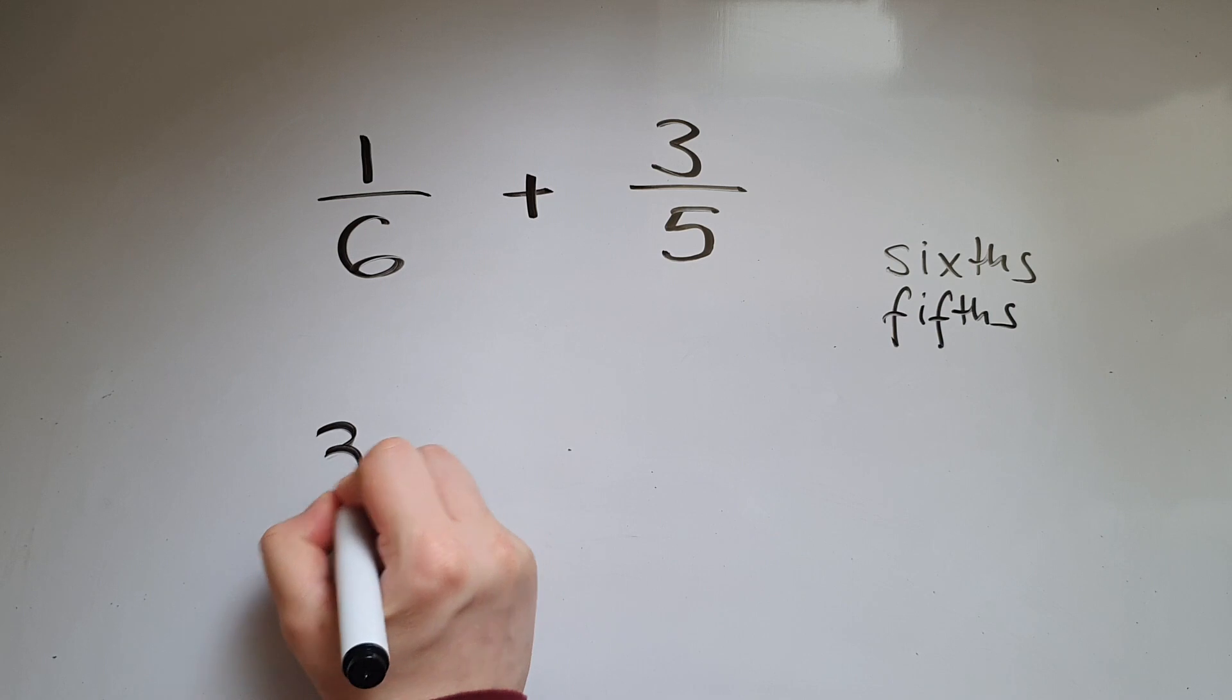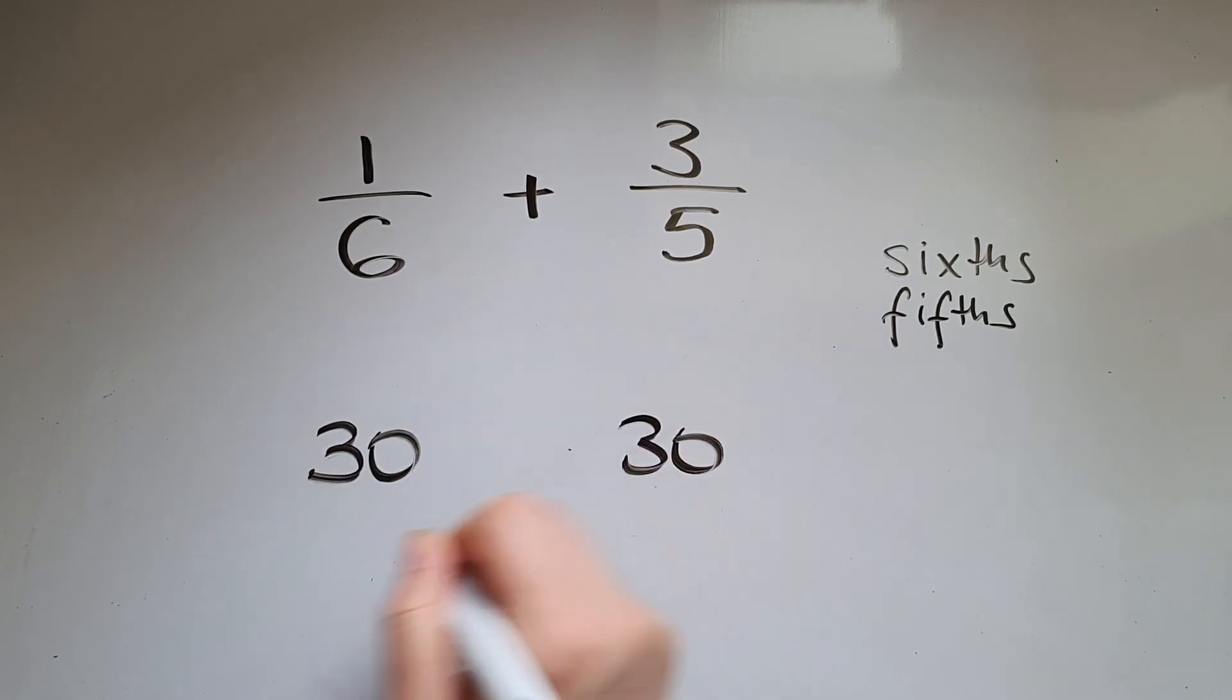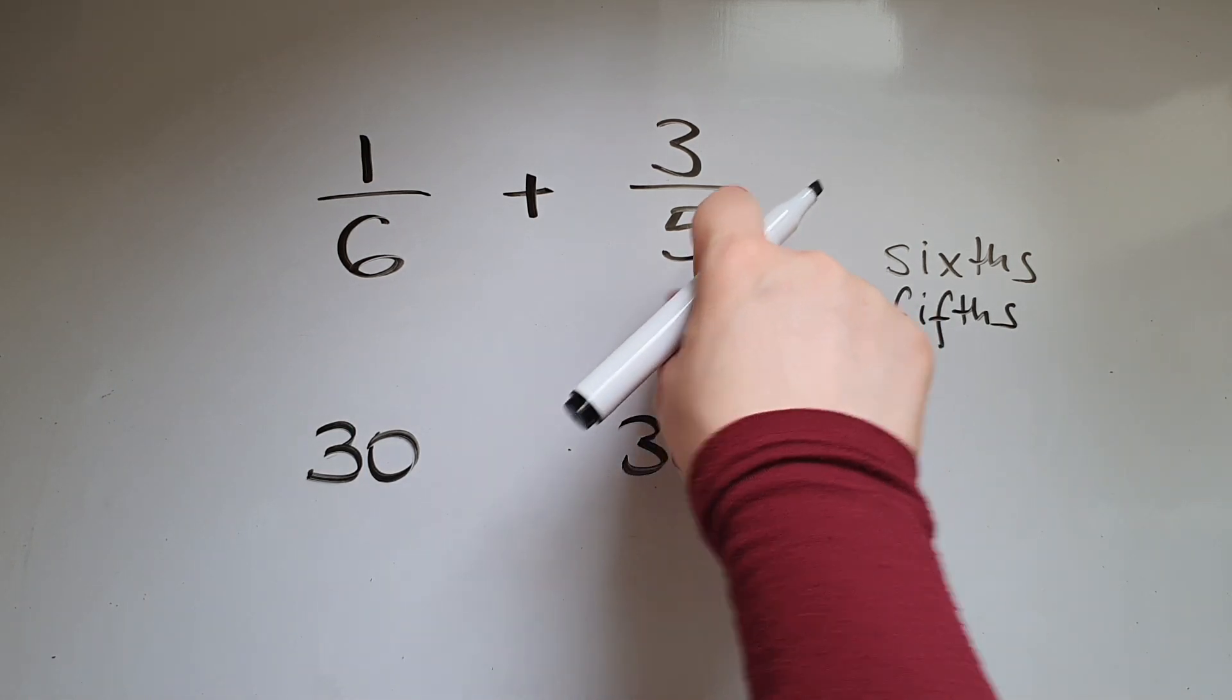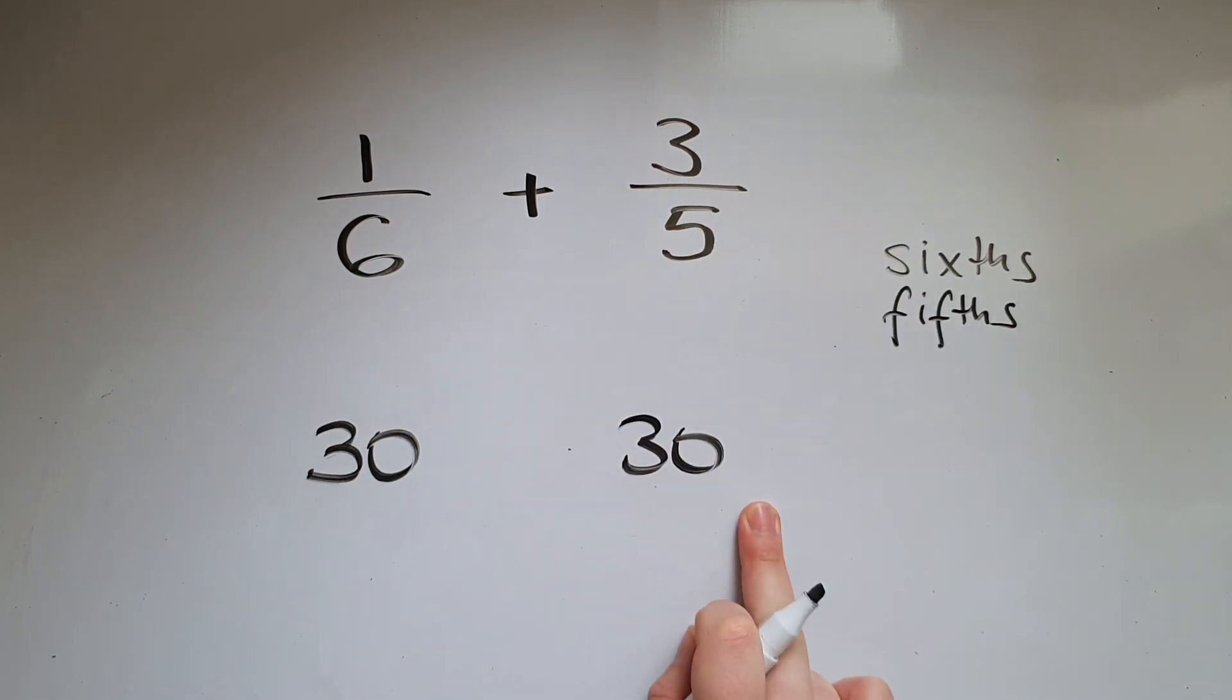Because six goes into 30 without a remainder. Five goes into 30.